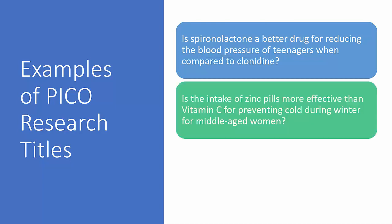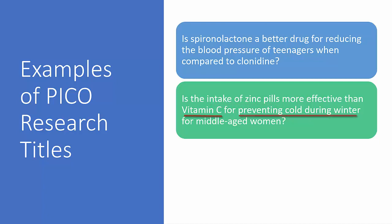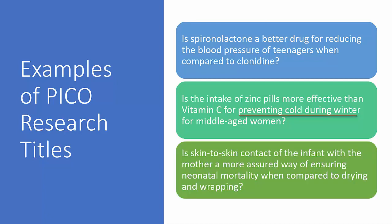Second example: is the intake of zinc pills more effective than vitamin C for preventing colds during winter for middle-aged women? The population are middle-aged women, the intervention is the use of zinc pills, the comparison is the use of vitamin C instead, and the outcome is cold prevention during the winter months.